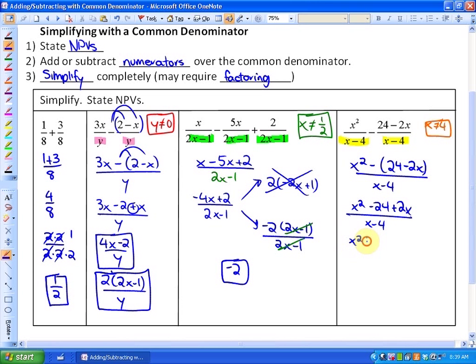If we put the numerator into standard form of a quadratic, it'll be easier to factor. Our factors in the numerator would be (x plus 6) and (x minus 4), over x minus 4. These common x minus 4 factors can be divided out, leaving us with a simplest form of x plus 6.